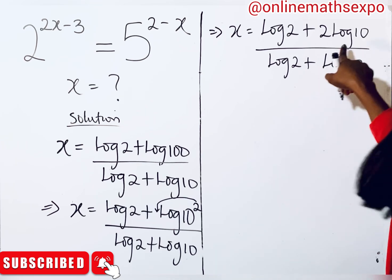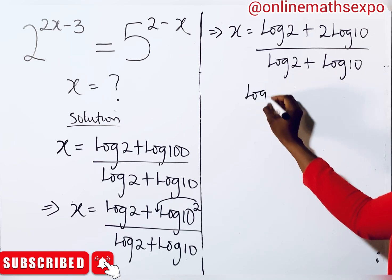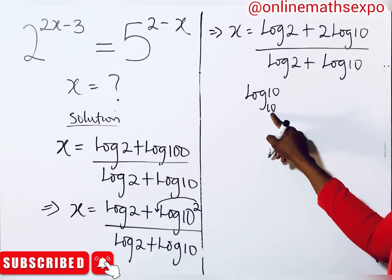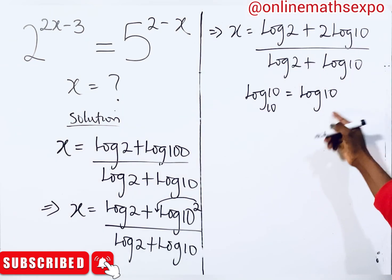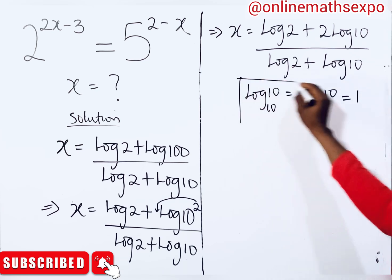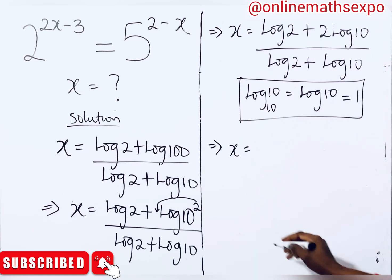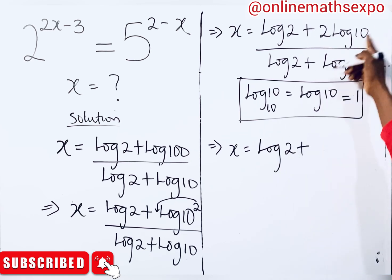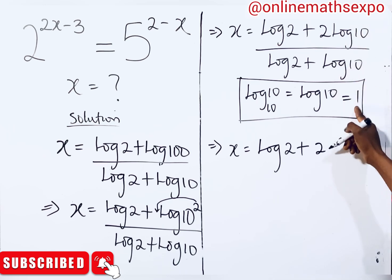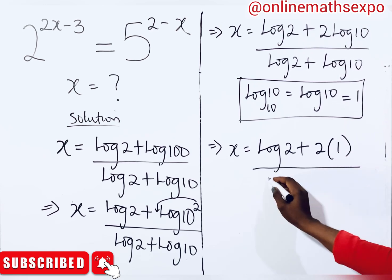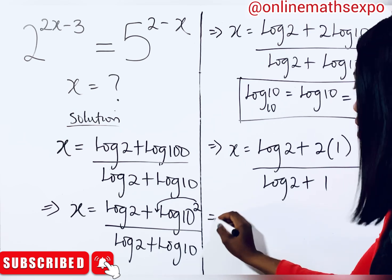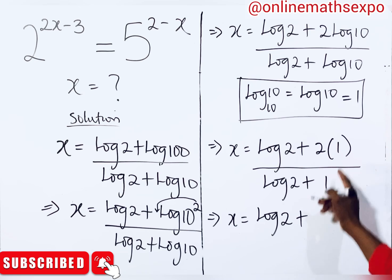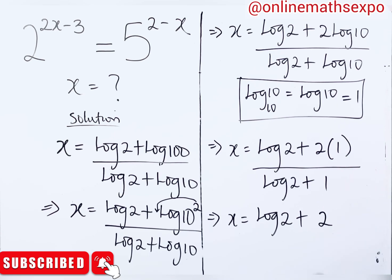Since this is a common log with base 10, log(10) equals 1. So 2·log(10) becomes 2×1 = 2, and log(10) in the denominator becomes 1. Therefore x equals log(2) + 2, all over log(2) + 1.